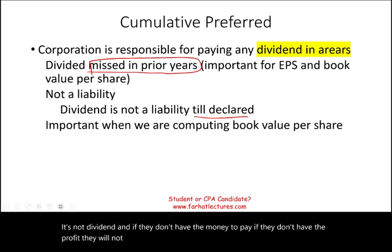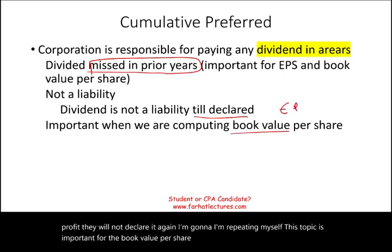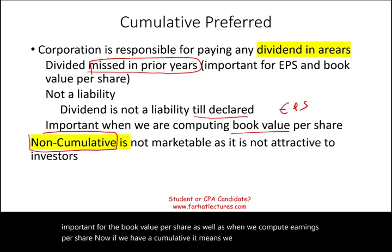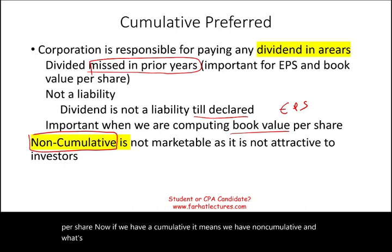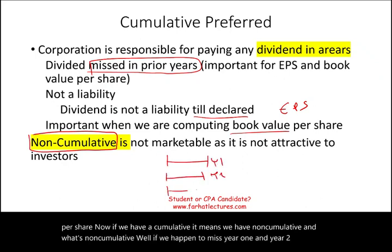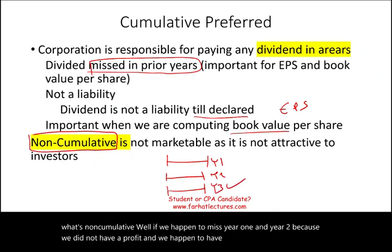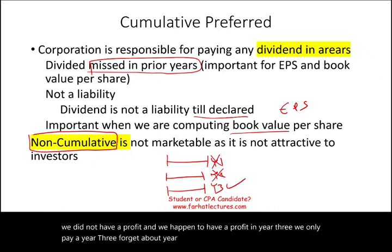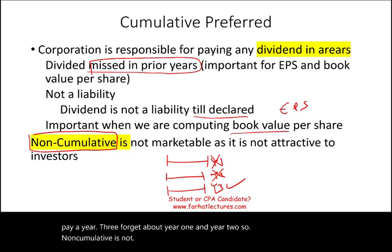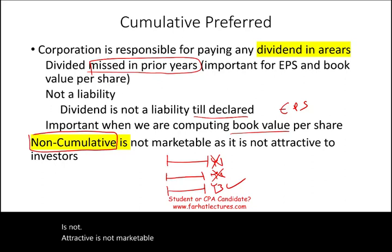This topic is important for book value per share as well as earnings per share. If we have cumulative preferred, there's also non-cumulative preferred. With non-cumulative, if you miss year one and year two because there was no profit, and you have profit in year three, you only pay year three — forget about year one and year two. Non-cumulative is not attractive or marketable to shareholders. People prefer cumulative.